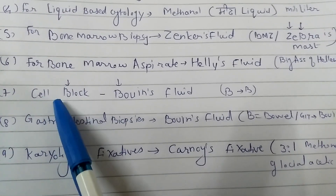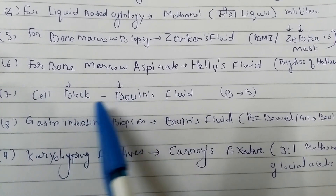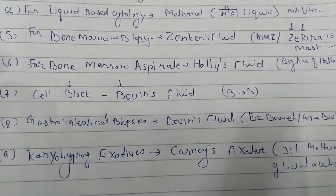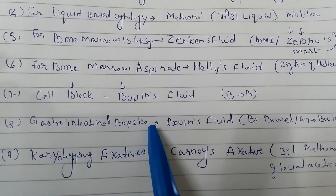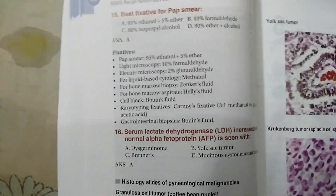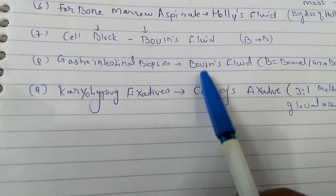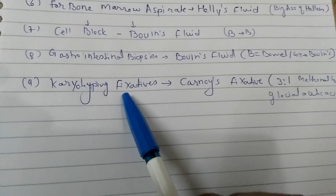For cell block, we use Bouin's fluid — very easy: B for block and B for Bouin's, so B leads to B. For gastrointestinal biopsy, we also use Bouin's fluid. We call the GIT the 'bowel' — B for bowel and B for Bouin's, so B se B ho jata hai. Both cell block and GIT biopsies use Bouin's fluid.